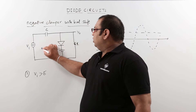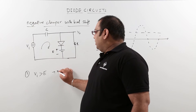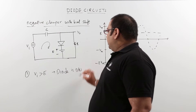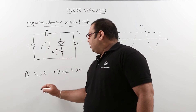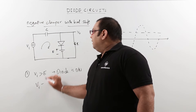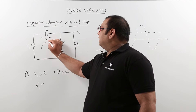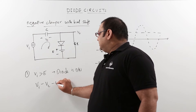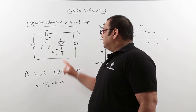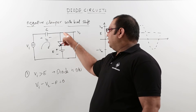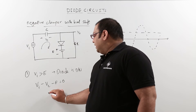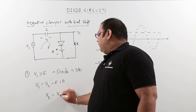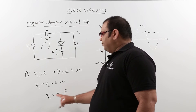When the diode is conducting, take a loop equation. In the diode ON condition, the loop equation is Vi minus Vc minus E equals 0, because the diode is conducting and the voltage across it is 0. So from this, Vc is equal to Vi minus E — this is the output.